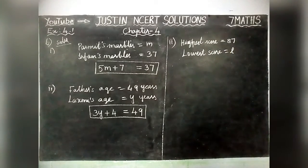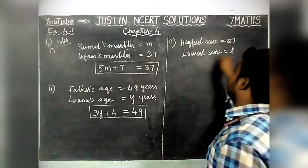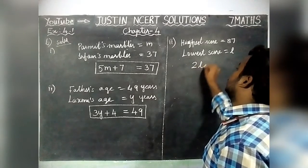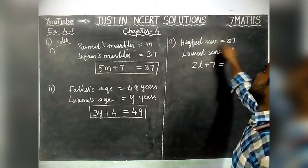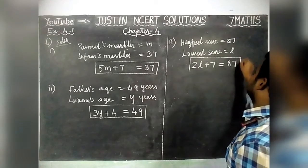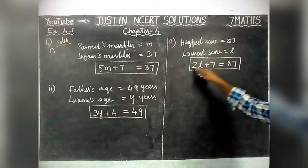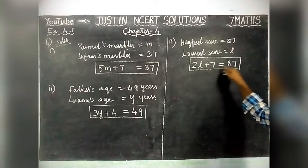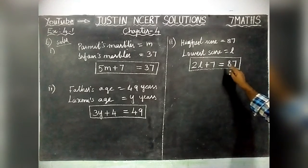Twice the lowest mark plus 7. So, twice the lowest mark: 2 into L, plus 7 is equal to the highest score, which is 87. So, 2 times of lowest mark plus 7 is equal to highest mark. The equation is 2L + 7 = 87.